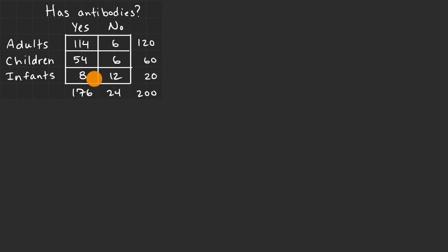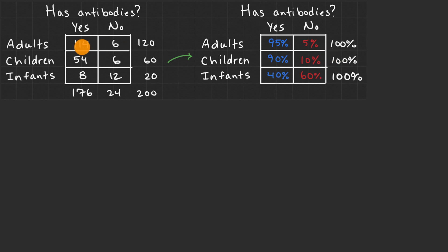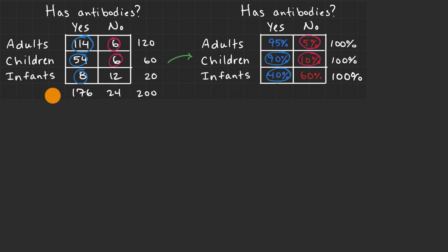We can look at this data, but it still doesn't give us a visual representation of what's going on. One step we can take is to think about percentages, which might help us think about the likelihood of having antibodies. For example, 114 over 120 is 95% — so 95% of adults have antibodies and 5% don't. For children, 54 over 60 is 90%, while six over 60 is 10%. And for infants, eight out of 20 is 40%, while 12 out of 20 is 60%.